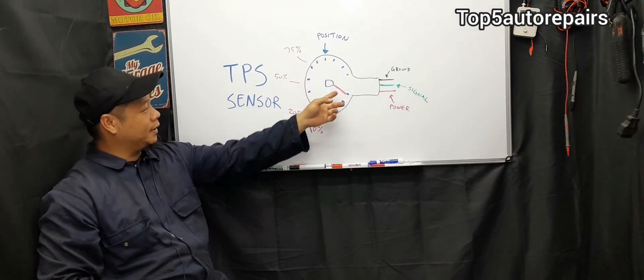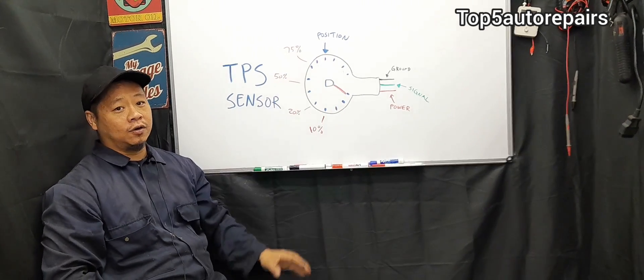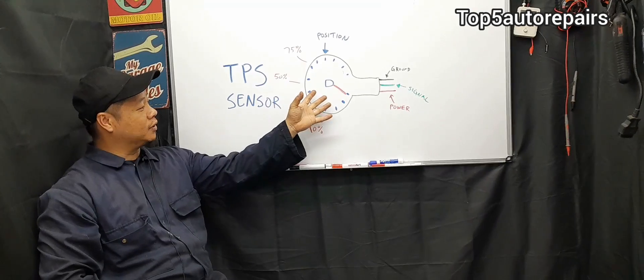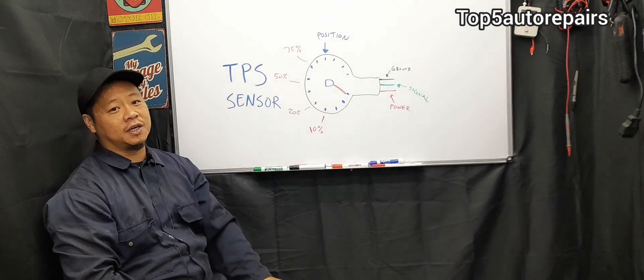By knowing the amount of opening of the throttle plate, or throttle blade, or the valve, the computer is going to know how much fuel should be injected into the engine.